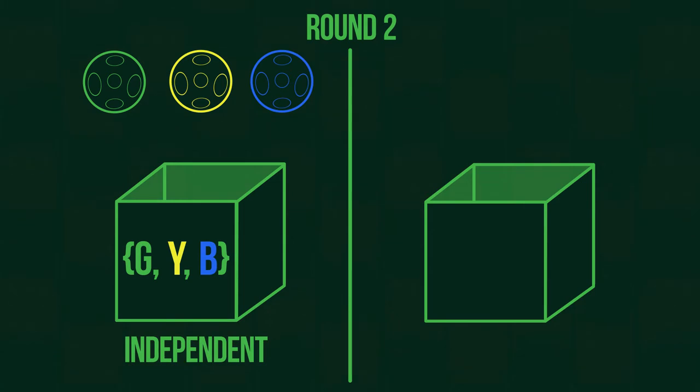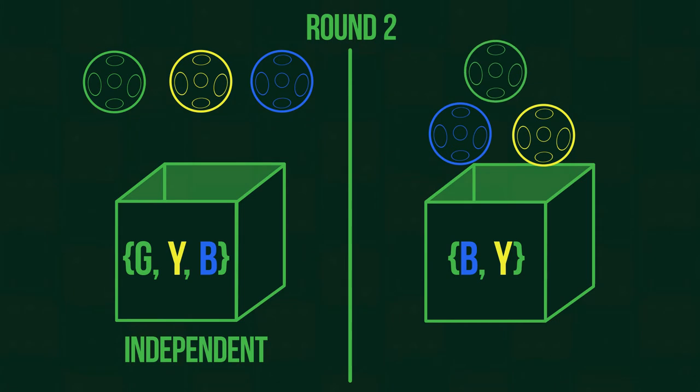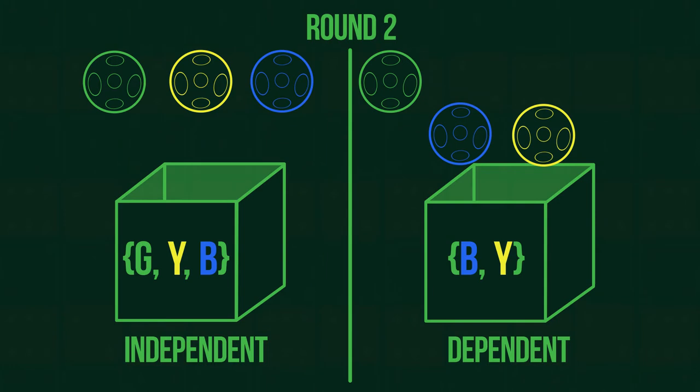But in the second experiment, the sample set depends on what ball was taken out in the first round. So if we took out yellow, the set will be blue and green. If we took out blue, we will get yellow and green in the second round. And blue and yellow if we took out green. In this experiment, the second round depends on the result of the first round.